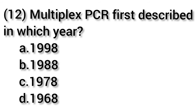The next question: multiplex PCR was first described in which year? Option A 1998, option B 1988, option C 1978, and option D 1968. The answer is option B — multiplex PCR was first described in 1988.